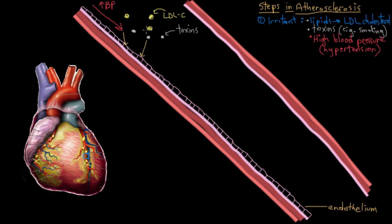Our second step is to actually have damage to the endothelium by the irritant. Our barrier now is broken down — it's started to break down. That's step two: actual damage of the endothelium. And in step three, regardless of whether it was toxins, cholesterol, or high blood pressure that damaged the endothelium, what happens next is that cholesterol will jump in and start to collect under the damaged endothelium.